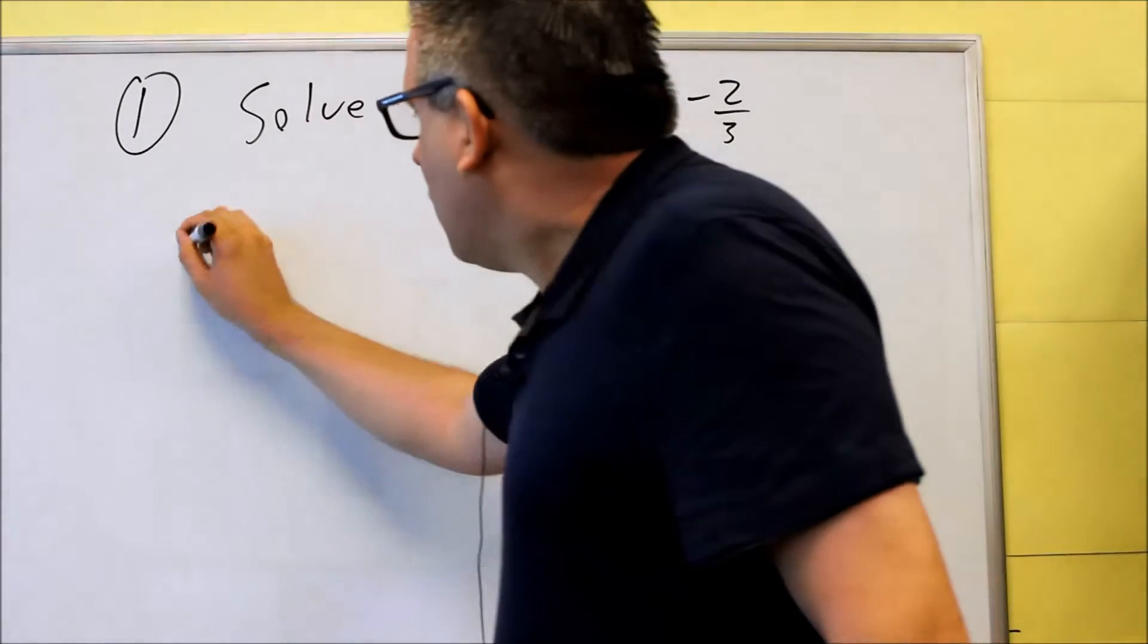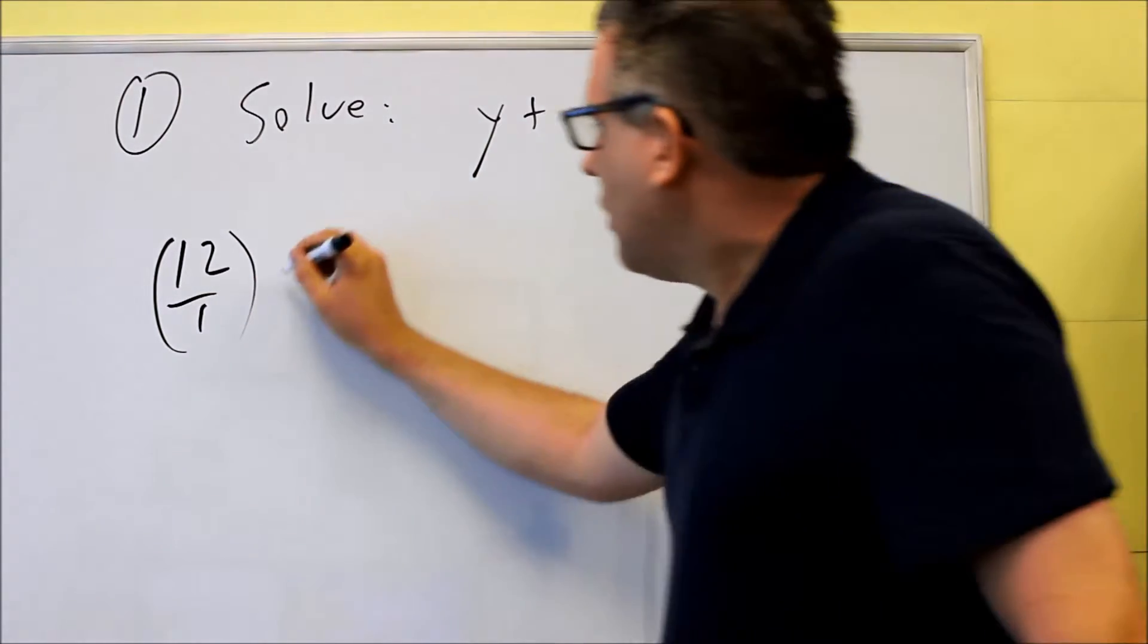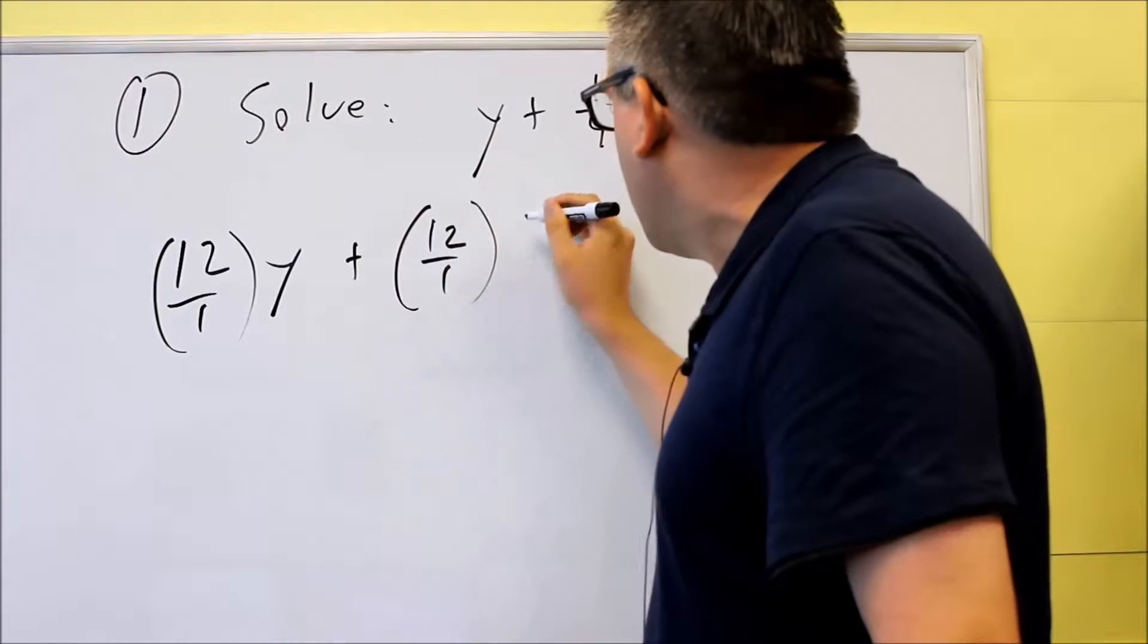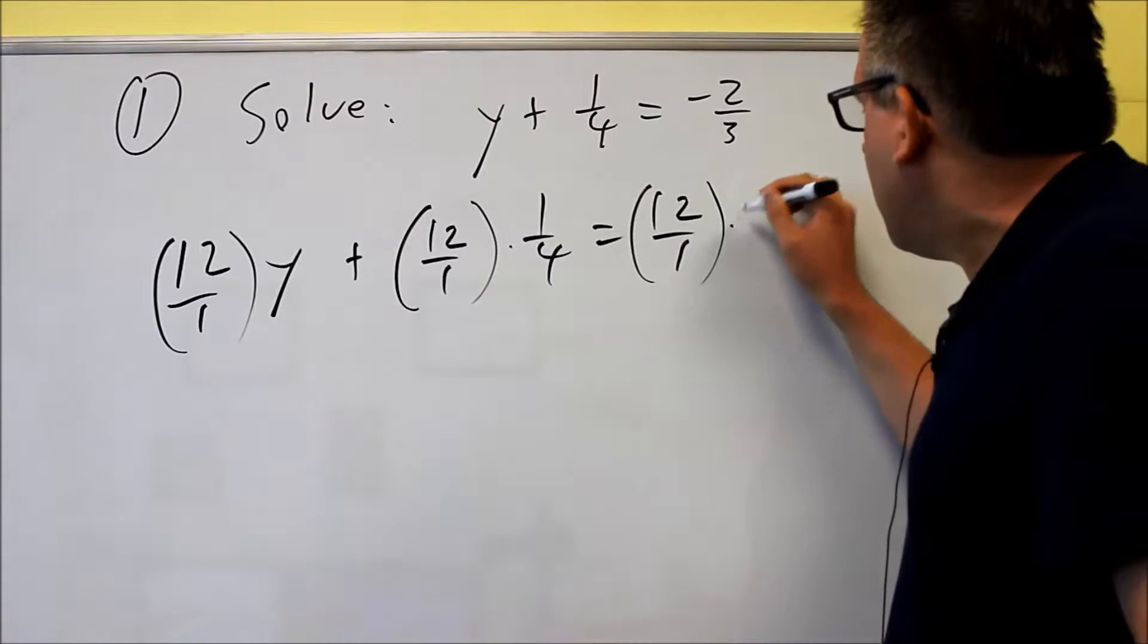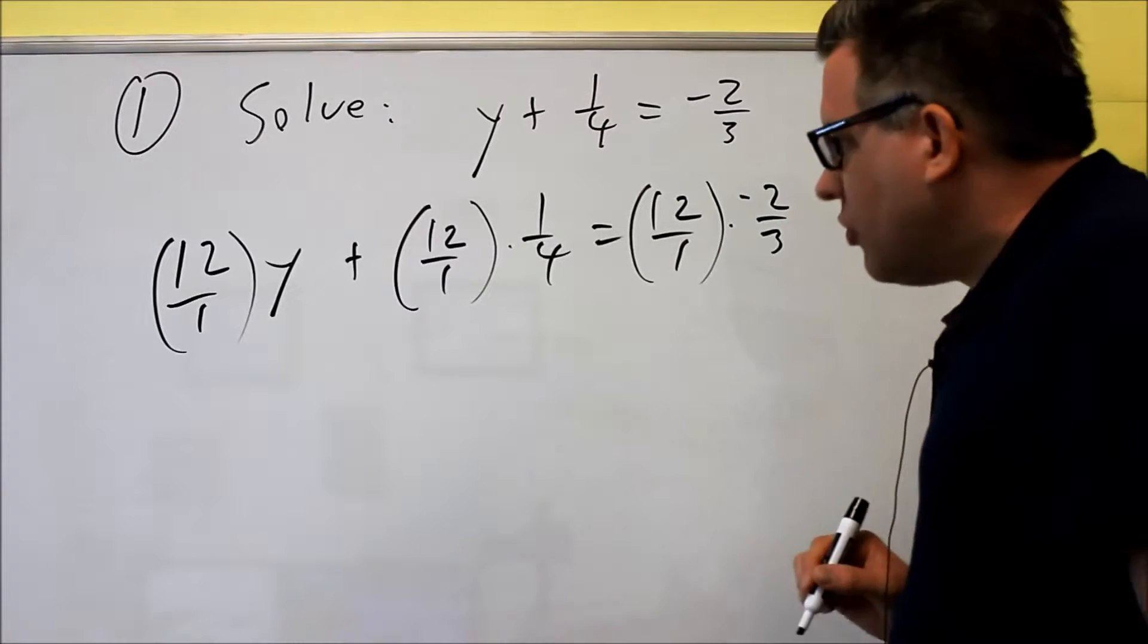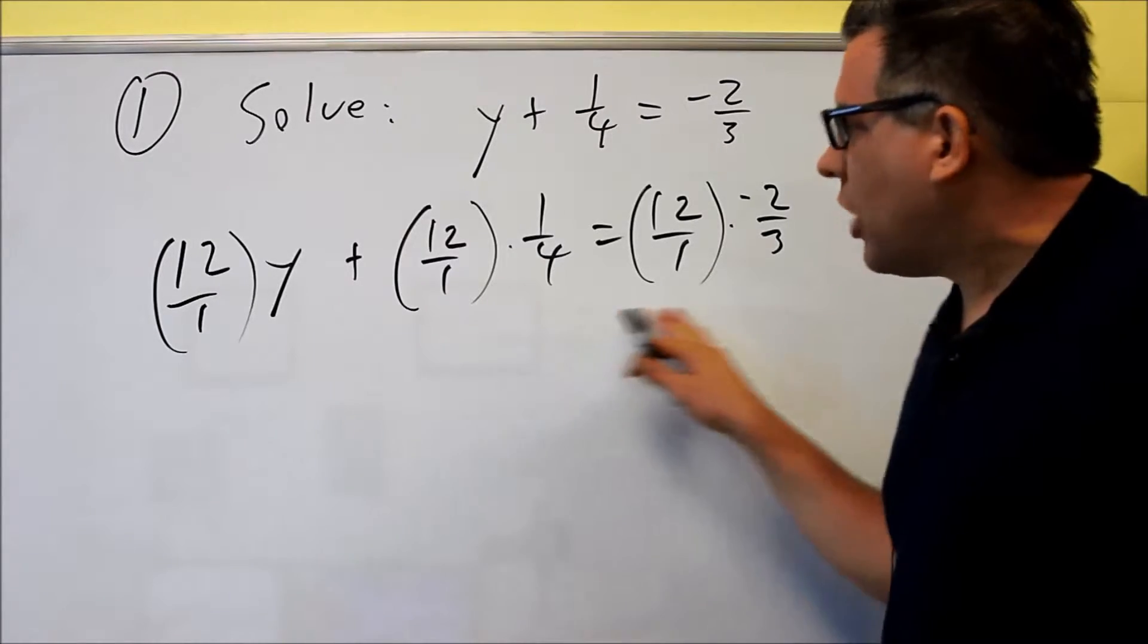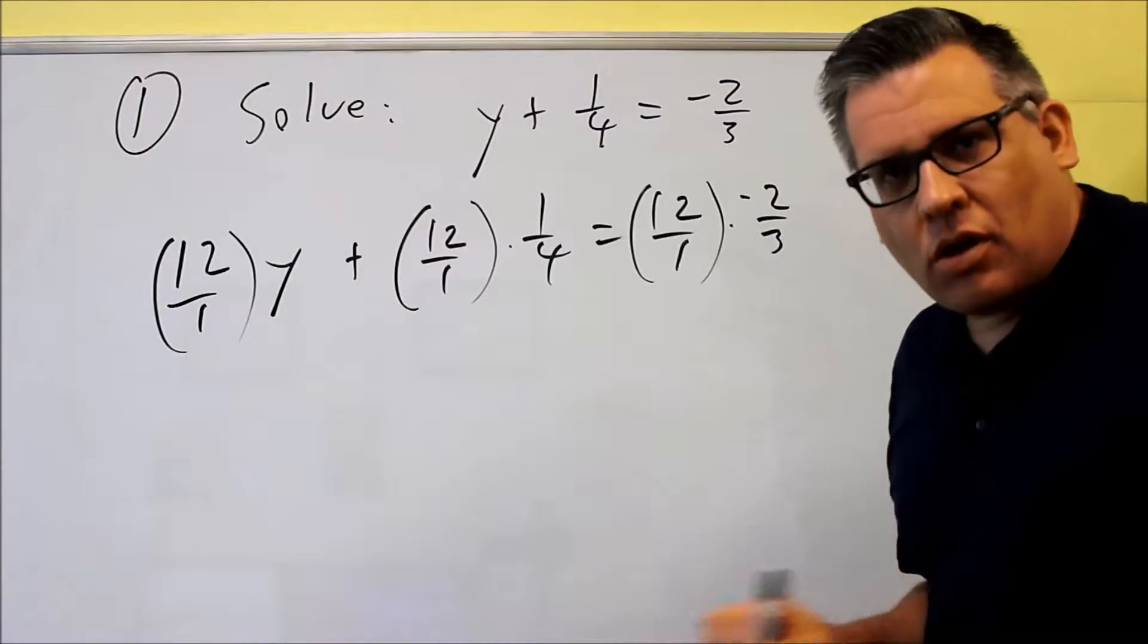Now when you're writing that, this is really what's happening. I'm going to put a 12/1 next to each piece here, so I'm going to do 12/1 there, 12/1 with the 1/4, and 12/1 will be multiplied by -2/3. So I'm just going to put a 12 next to each thing. I have the original problem and all I'm doing is writing 12/1 next to each one.